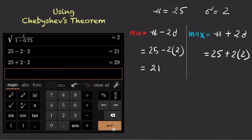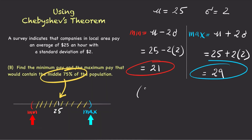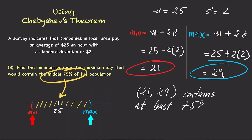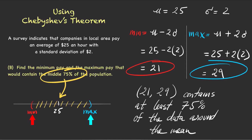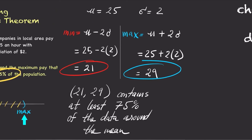Likewise, the upper bound is 29. To recap, at least 75% of companies in the local area pay between $21 an hour and $29 an hour.